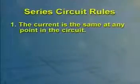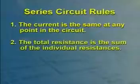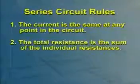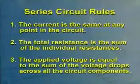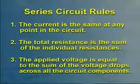First, the current is the same at any point in the circuit. The total resistance is the sum of the individual resistances, and the applied voltage is equal to the sum of the voltage drops across all the circuit components.